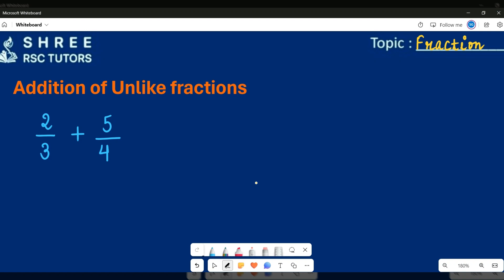First of all, let us understand what is the meaning of unlike fractions. Unlike fractions are those fractions which have different denominators. For example, as you can see, there are two fractions given on the screen, which are two-third and five-quarters. You can see that both of them are having different denominators, which are three and four respectively. That means both of the fractions are unlike fractions.